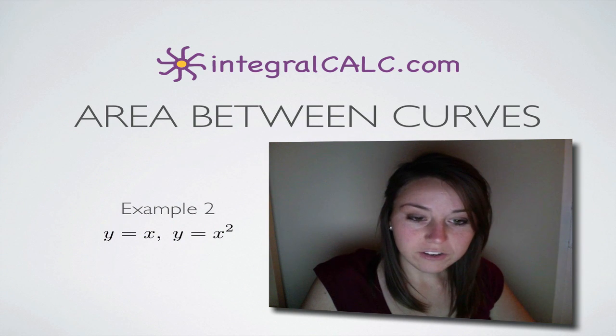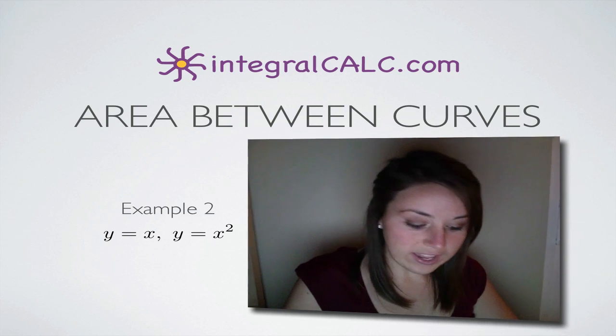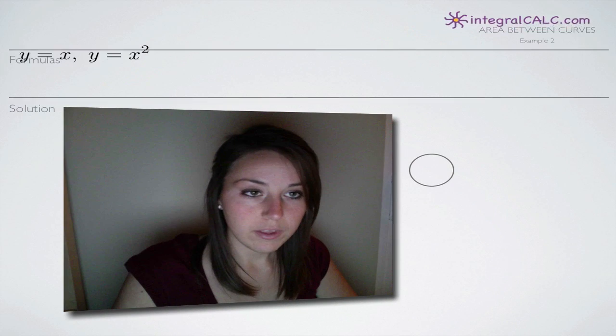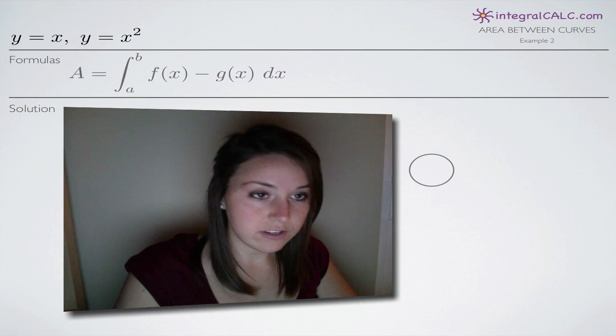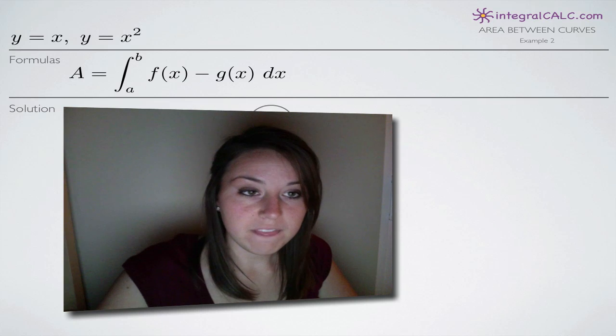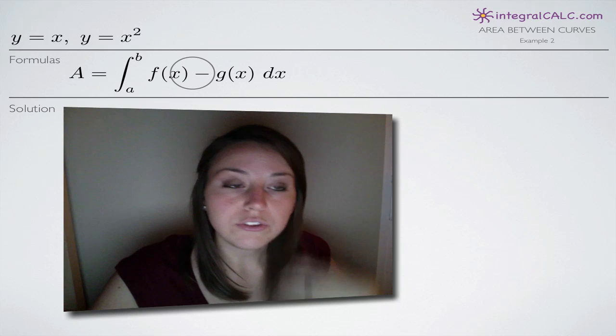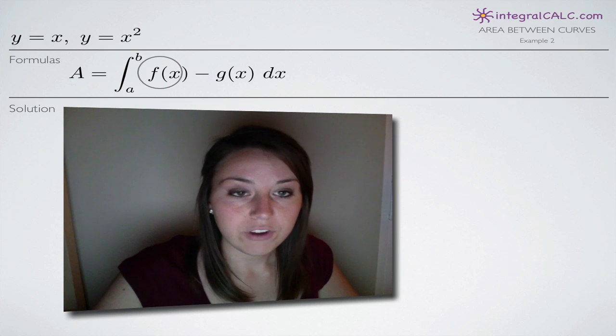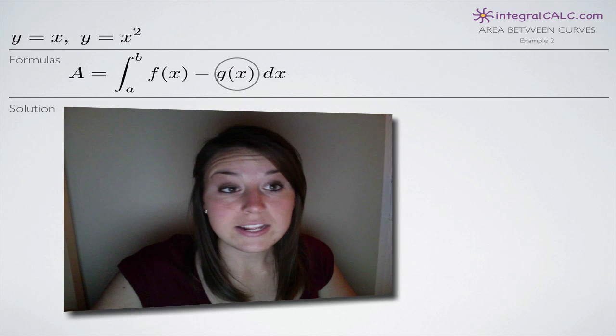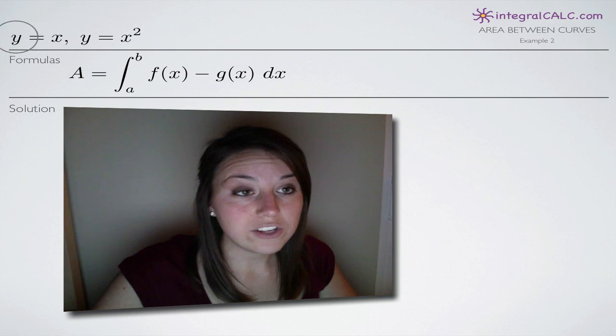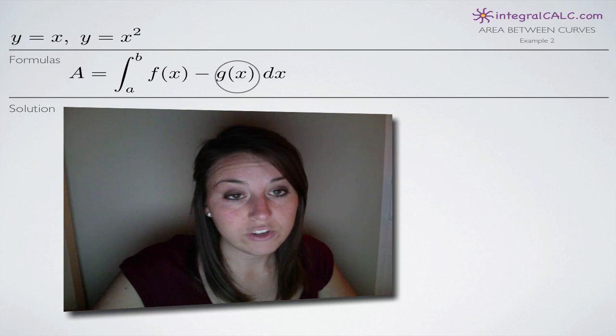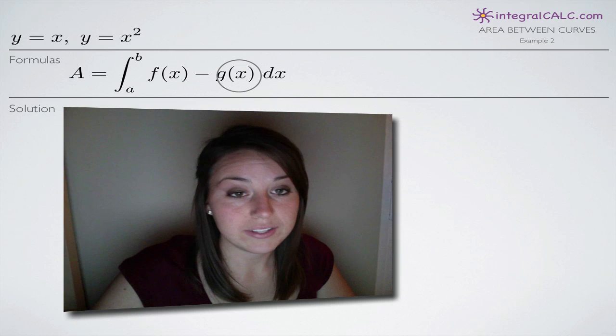In this particular example, we're given two functions. One is y equals x and the other is y equals x squared. The formula that we're going to be using to determine the area between these two curves is this formula here. Now, the first thing you'll notice is that we have two functions here inside of our integral, f of x and g of x. One thing we're going to need to determine is which of our functions will be f of x and which one will be g of x, which we'll get to in a second.